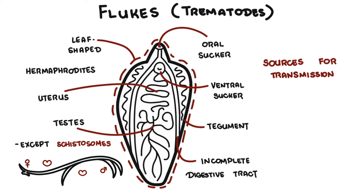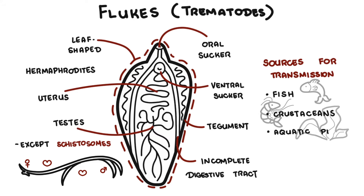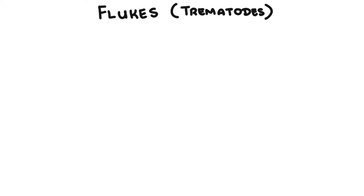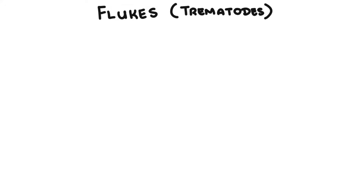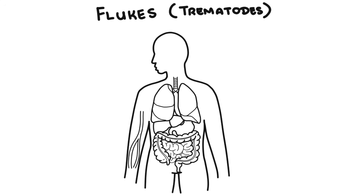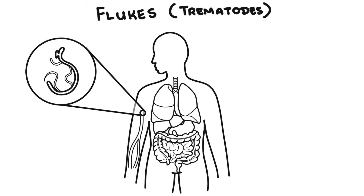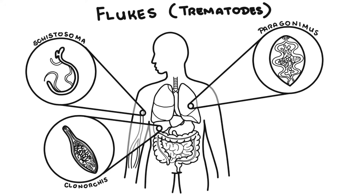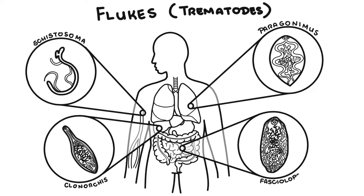Sources of transmission of human infection include fish, crustaceans, and aquatic plants. There are many types of trematodes or flukes, and different species tend to infect different parts of the human body. A good way to classify them is: blood flukes, which are the schistosomas; liver flukes, which are the clonorchis; lung flukes, paragonimus; and intestinal flukes, fasciolopsis buski.